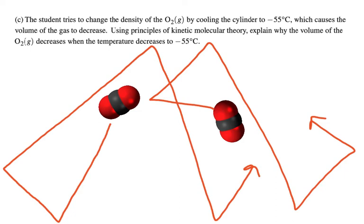For part C, a student tries to change the density of the oxygen by cooling the cylinder to minus 55 degrees Celsius, which causes the volume of the gas to decrease. Using principles of kinetic molecular theory, explain why the volume of the oxygen decreases when the temperature decreases to negative 55 degrees Celsius.